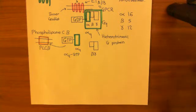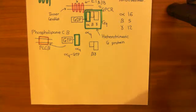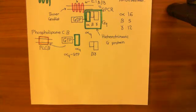What is phospholipase C beta going to do? Once it's been activated by the alpha-Q GTP subunit, it's going to break down a normal component of the phospholipid bilayer. Let's see what this normal component of the phospholipid bilayer that phospholipase C beta is going to work on.